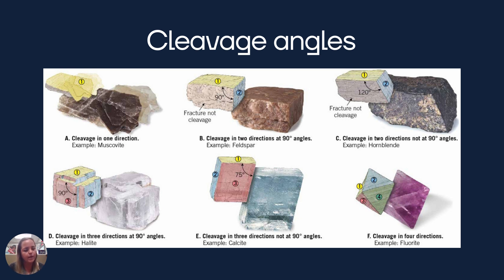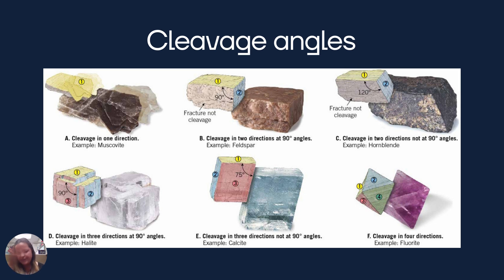Halite, sample D, is similar to our box — three cleavage planes, all meeting at 90 degrees. Moving to E, calcite also has three cleavage planes, but they don't meet at 90 degrees. I won't ask you to actually measure the cleavage planes — it'll just be, is it 90 or not 90? And then the last one, F, is fluorite — it actually has four cleavage planes. It's basically two pyramids stuck together, and you'll see me work with that sample in lab.